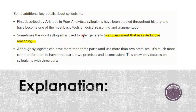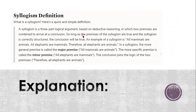Sometimes the word syllogism is used to refer generally to an argument that uses deductive reasoning. Although syllogisms can have more than three parts, it's much more common for them to have three parts: two premises and a conclusion. It is a three-part logical argument based on deductive reasoning. For example: 'All mammals are animals. All elephants are mammals. Therefore, all elephants are animals.' The more general premise is called the major premise, and the more specific premise is called the minor premise. The conclusion joins the logic of the two premises.